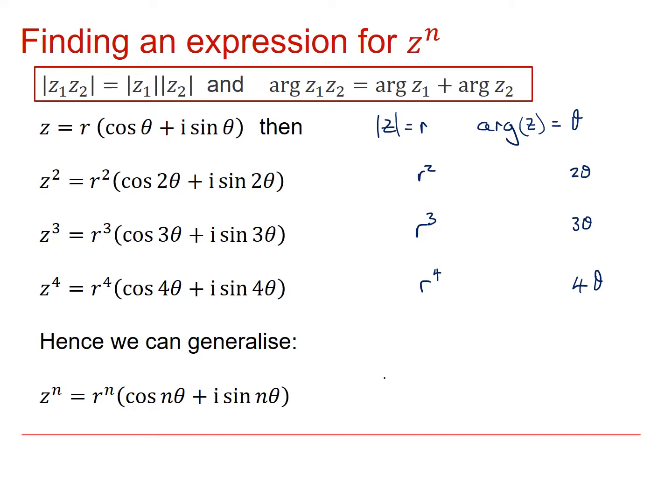In general, we say then that z to the n is equal to r to the n cos nθ plus i sine nθ. These are multiple angles.